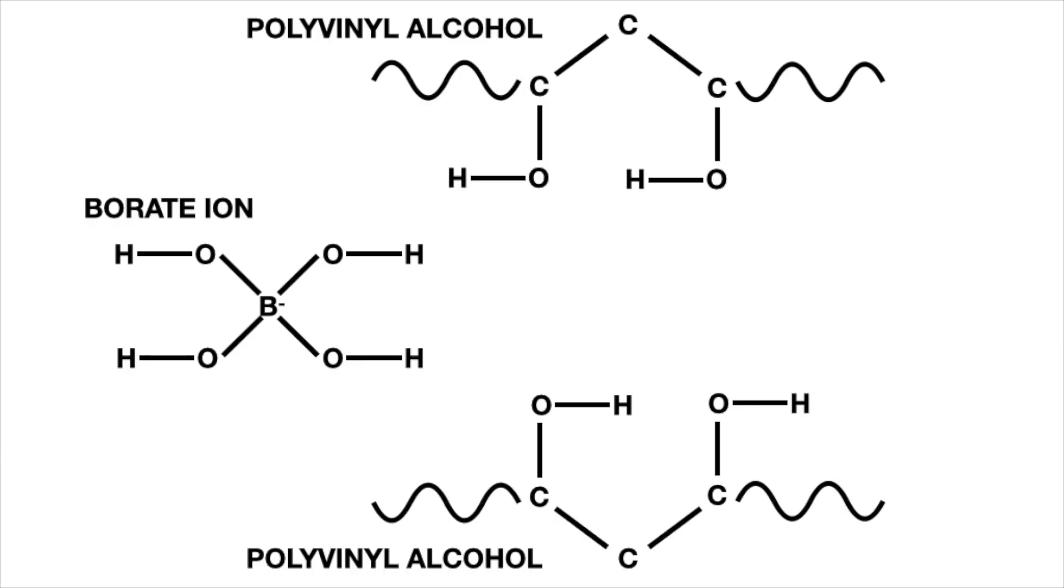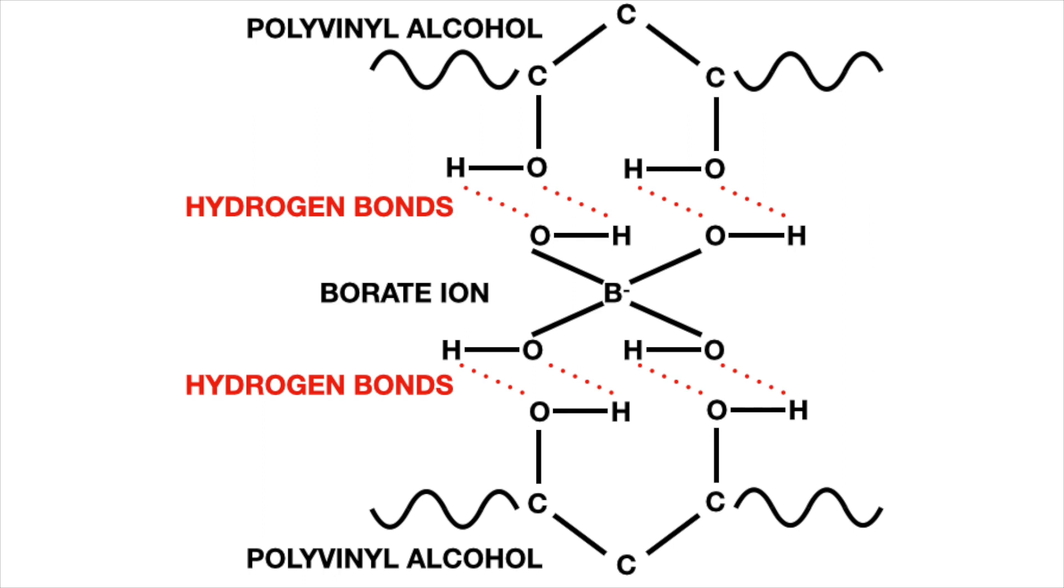The borate ions then connect these chains of polyvinyl alcohol through hydrogen bonds to cross-link the polyvinyl alcohol to form our slime.